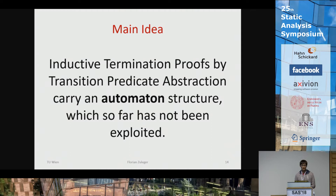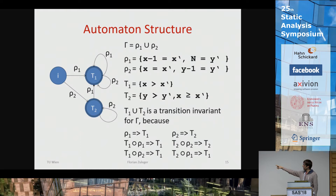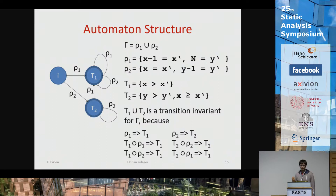This automaton structure has been noticed previously but not exploited. In this talk I use this automaton structure to extract much more information from the proof. The automaton is constructed by using the bottom part of the inductive proof table as a transition table: from an initial state we go to a respective relation T, and then one more step leads to certain transition relations.